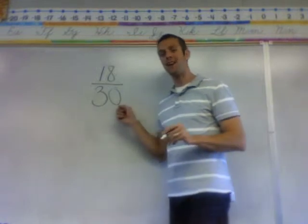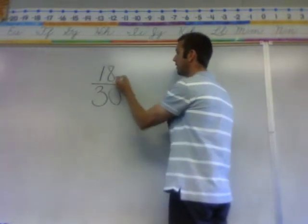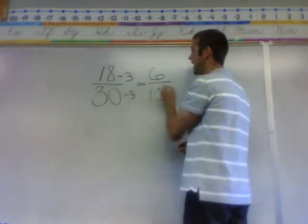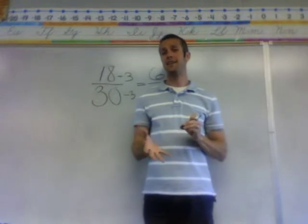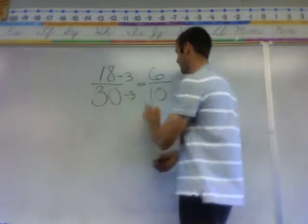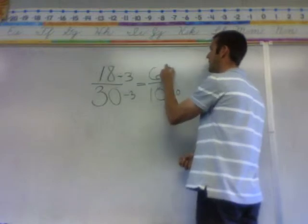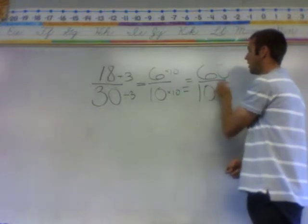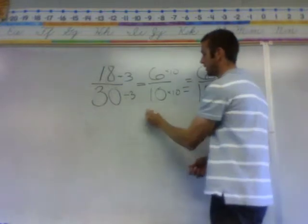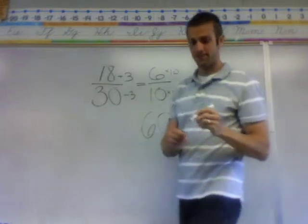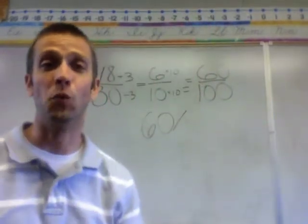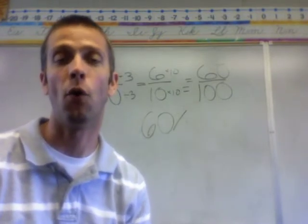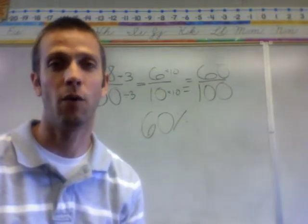Instead, what if we make it a 10 on the bottom? Divide by 3. Whatever you do to the bottom, you have to do to the top. Now I have 6 tenths. 6 out of 10 is 60%, right? Because if you multiply this by 10 and this by 10, you now have 60 hundredths, which is 60%. You can manipulate the fractions as many times as you want, but you need to get that 100 on the bottom to name that part of a whole group, because 100 is the whole thing.